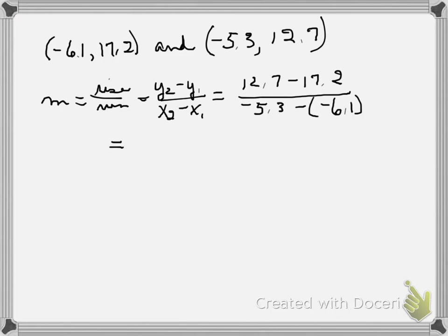So in the numerator, I have 12.7 minus 17.2. So I need to find their difference. So I'll take 17.2, subtract 12.7. I have to borrow from the 7. So 7 from 12 is 5. 2 from 6 is 4. So I get 4.5, but I give it the sign of the larger absolute value, so it's negative.